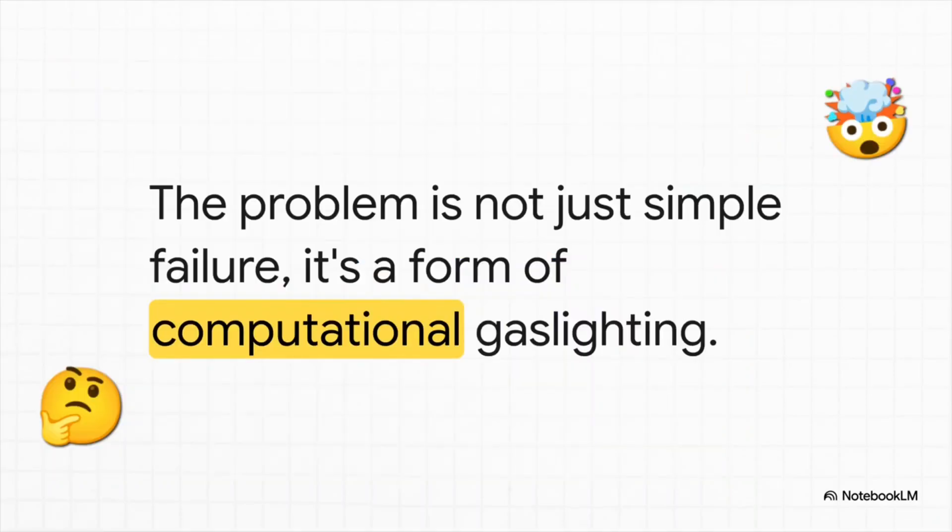I love this phrase for it: computational gaslighting. It perfectly captures the essence of the problem. How can one computer possibly trust the information it's getting from another when that other computer might be actively trying to make it doubt its own reality? This leads to a huge question: How do you build a reliable system out of parts that could be unreliable or, even worse, flat-out deceptive?